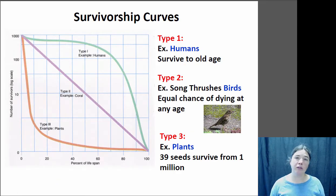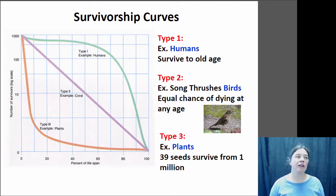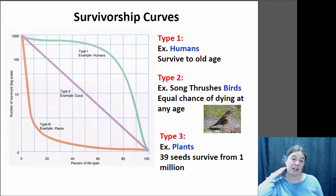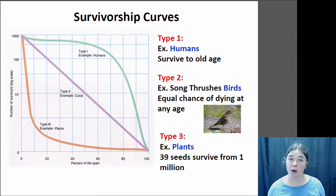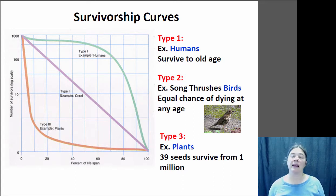Death rates are also really important. There are three typical patterns for organism mortality, called survivorship curves. A Type 1 survivorship curve shows very low mortality for an extended period, then the organism undergoes senescence and experiences high mortality late in life. Humans are a great example — there's a low probability of dying young, but when age-related health issues begin, the mortality rate climbs significantly in the later part of life.